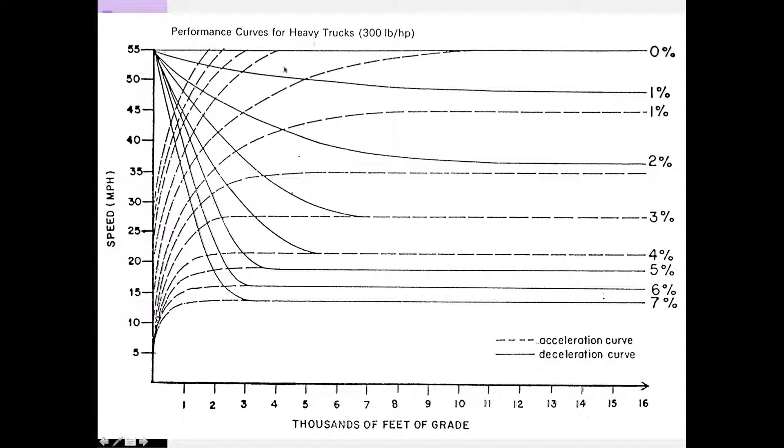This is for heavy trucks, and it plots the exit speed of the truck from a grade, any one of these grades, over a certain number of feet. So if the grade is 1,000 feet long and is 3%, then the exit speed would be just under 30 miles per hour. That's the idea. And we can compile these curves using power calculations.